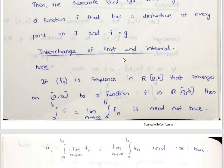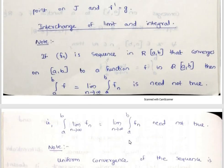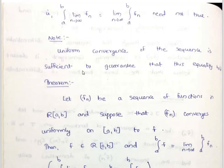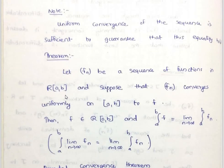Interchange of limit and integral: if the sequence fn converges uniformly to f on [a,b], then f is in R[a,b] and the integral from a to b of f equals the limit as n tends to infinity of the integral from a to b of fn. Without uniform convergence, it is not necessarily true. Uniform convergence of the sequence is sufficient to guarantee this equality. Let the sequence fn be a sequence of functions in R[a,b] and suppose that fn converges uniformly on [a,b] to f. Then f is in R[a,b] and the integral from a to b of f equals the limit as n tends to infinity of the integral from a to b of fn.